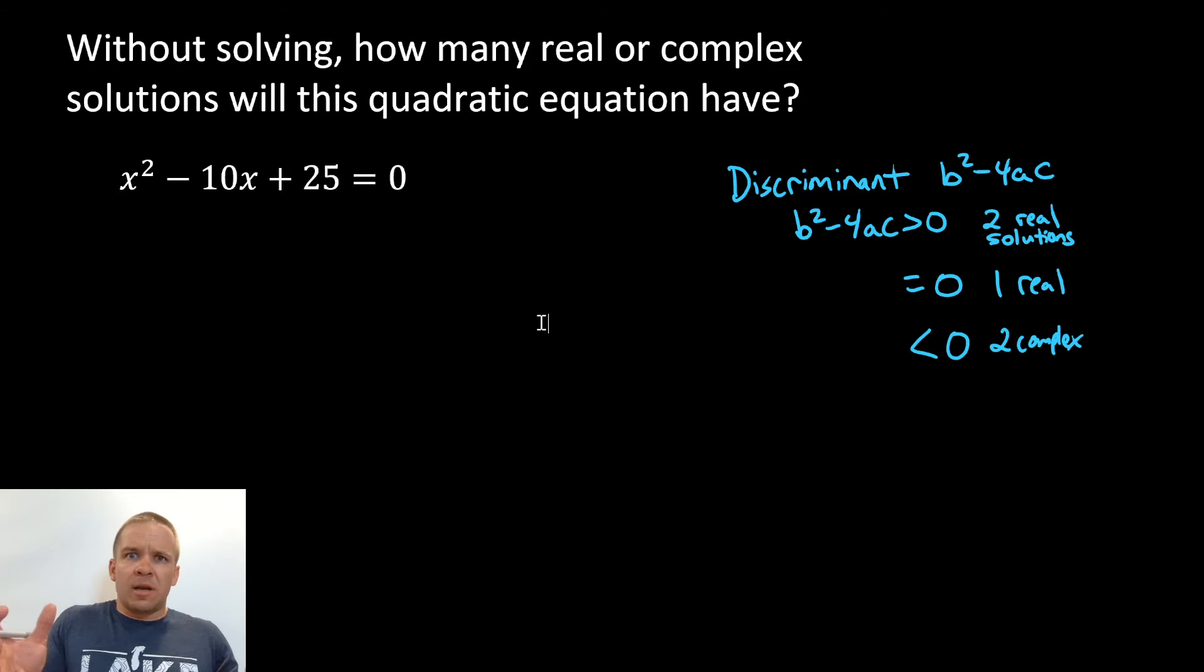All right. Well, I'm going to plug that into my formula, right? We're set up ready to go. It's equal to zero, nothing to do there. So let's see here. B squared. So that's going to be negative 10 squared. Make sure that's in parentheses, right? Got a square of that becomes positive 100.